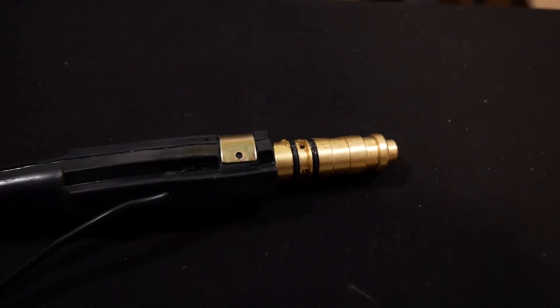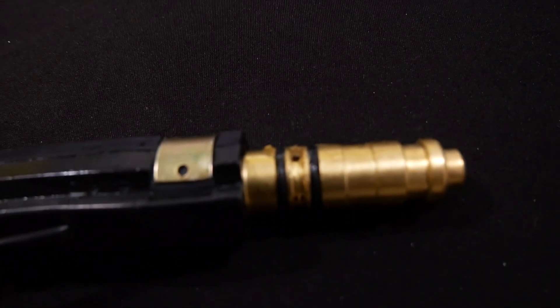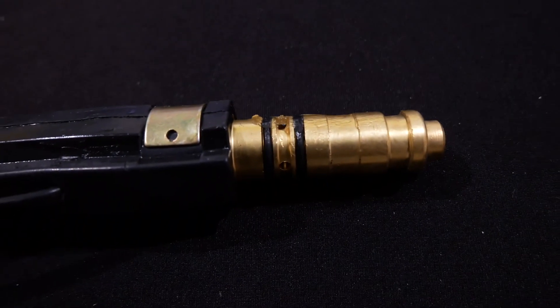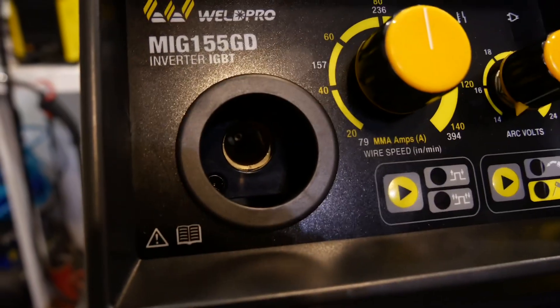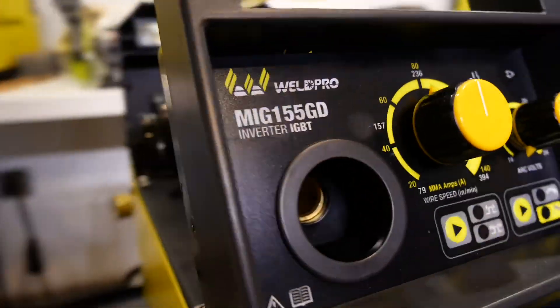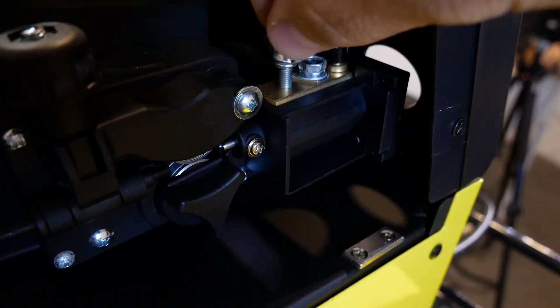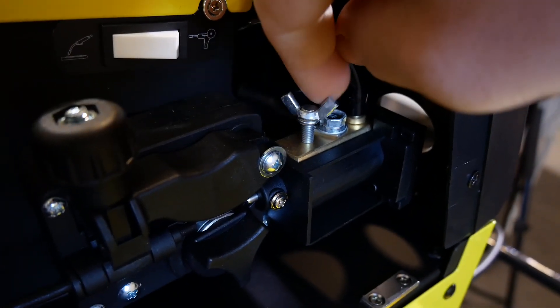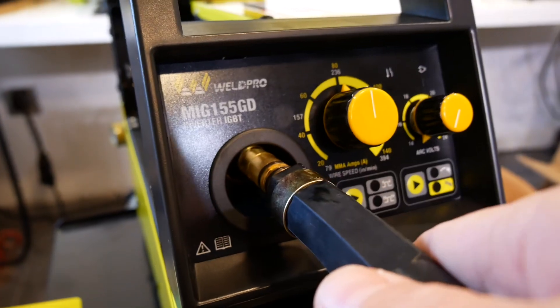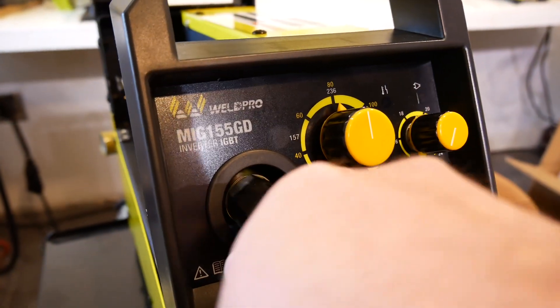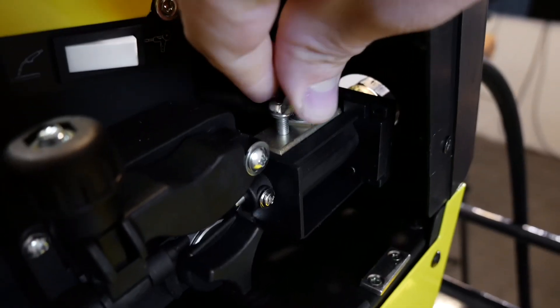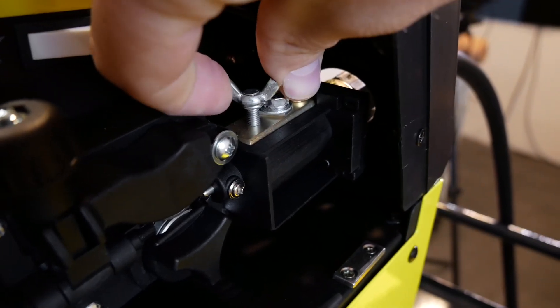Next, let's go ahead and set up the MIG gun and get the wire fed through the liner. There are two O-rings on the male end of the MIG cable that goes into the machine. It's important that before inserting this male end of the MIG cable, you loosen the wing nut that's located on top of the wire feeding unit. Once the wing nut is loose, you can go ahead and insert the male connector into the machine. Retighten this wing bolt to secure the cable.